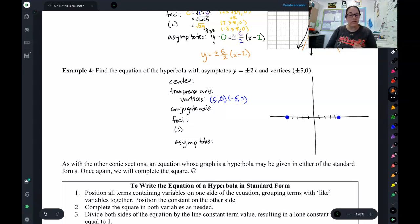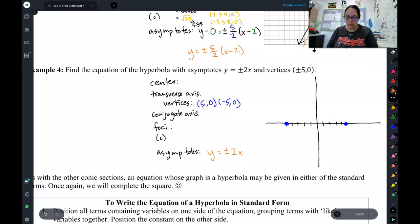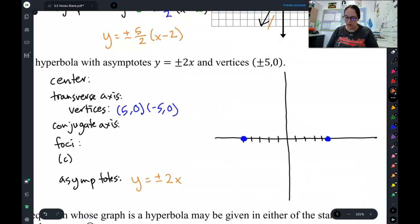And this time it also gives us the equations for our asymptotes. So, what I would like you to do is pause the video. Knowing what we know thus far, I would like you to complete this hyperbola, fill in the rest of the information, and then come up with an equation. When you think you're done, come back to check your work.